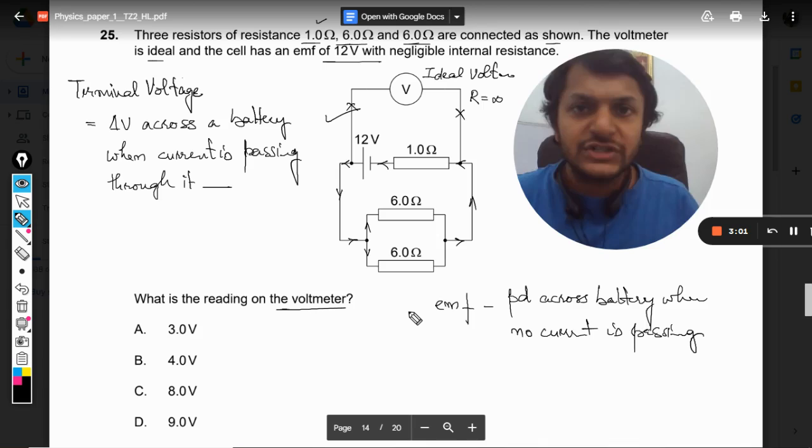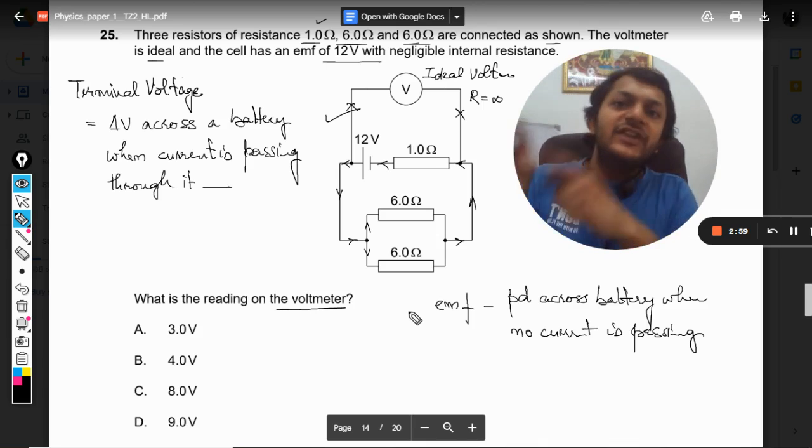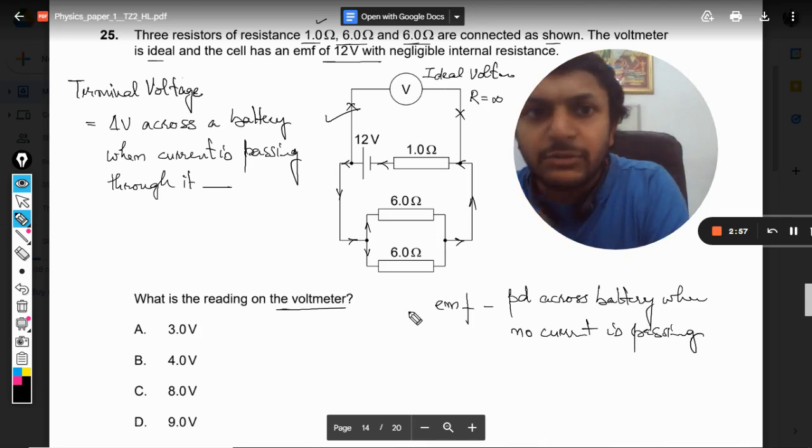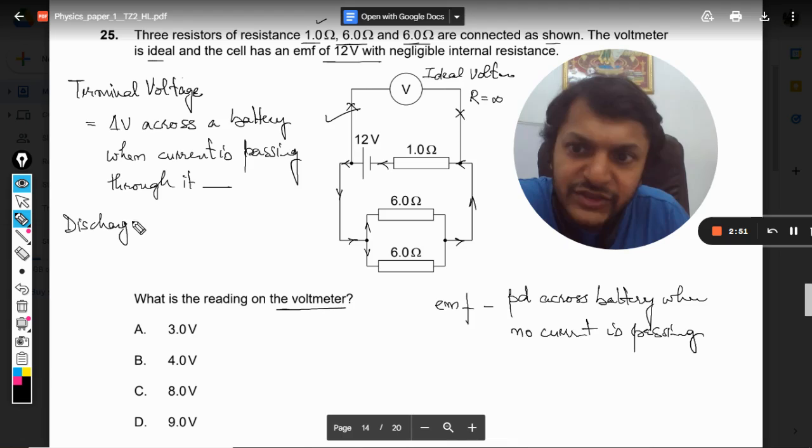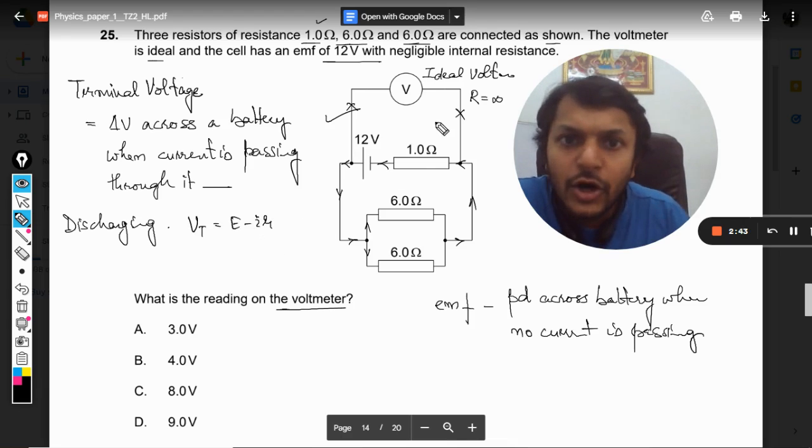EMF, electromotive force, this is EMF. And if the current is passing through it, it is known as terminal voltage. And there is a formula for discharging, like the current is withdrawn from the battery. This terminal voltage is E minus IR, where R is the internal resistor or whatever resistor we are using here.